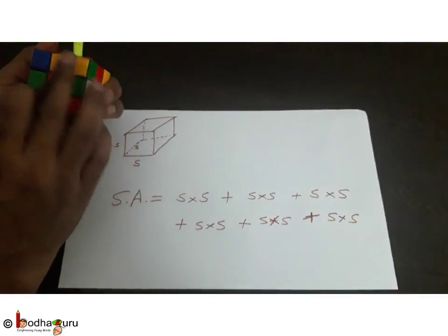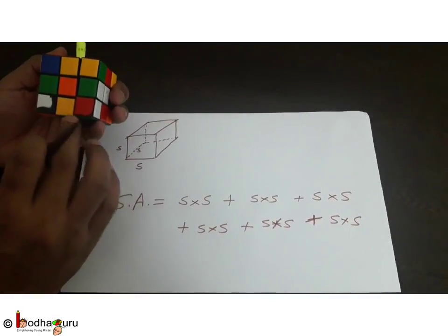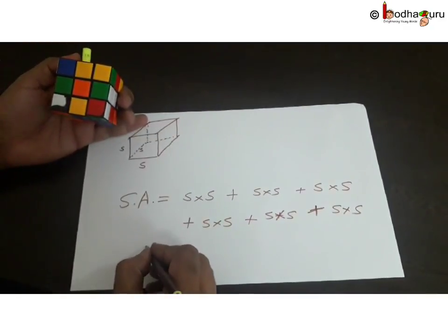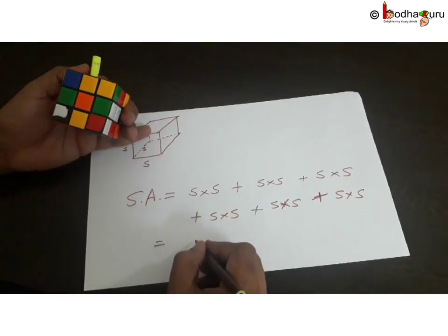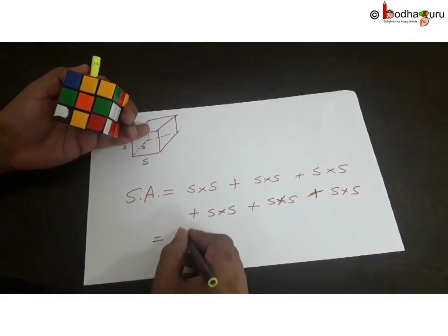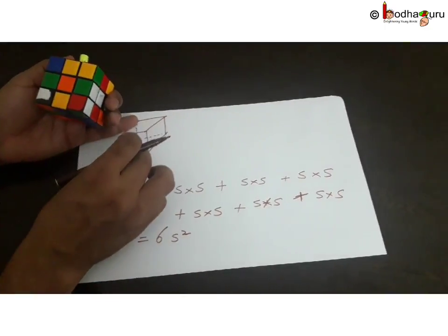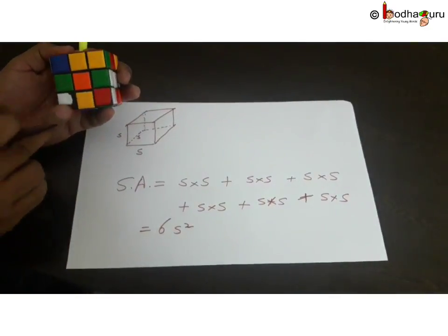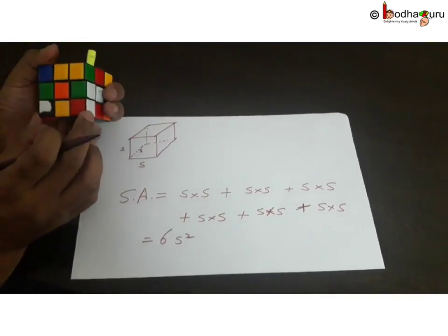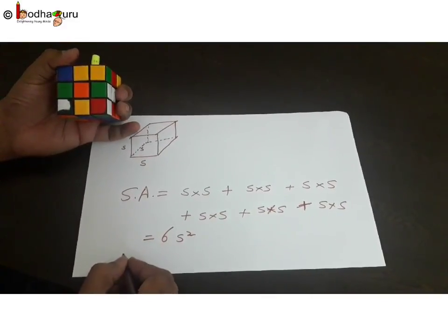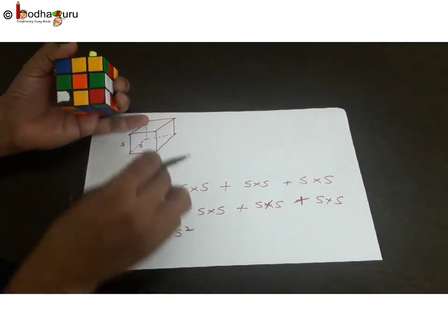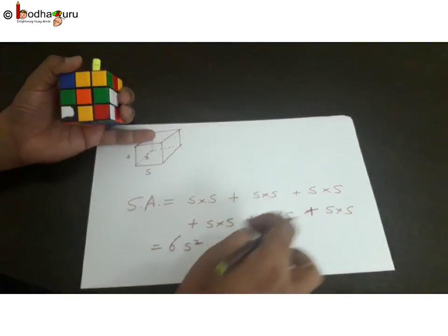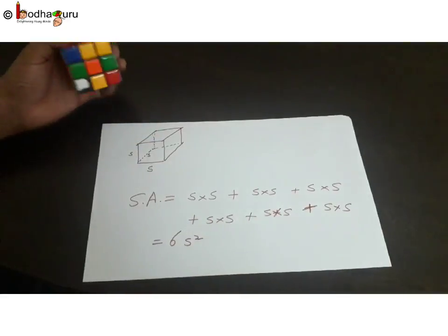Each of the faces are the same size, and the length, breadth, and height are equal. So S × S is the area of one face. With 6 faces, that means S² added 6 times, which equals 6S². So if the measure of one side of a cube is S, then its surface area is 6S². S² is the area of one face, and there are 6 faces: S² + S² + S² + S² + S² + S² = 6S².